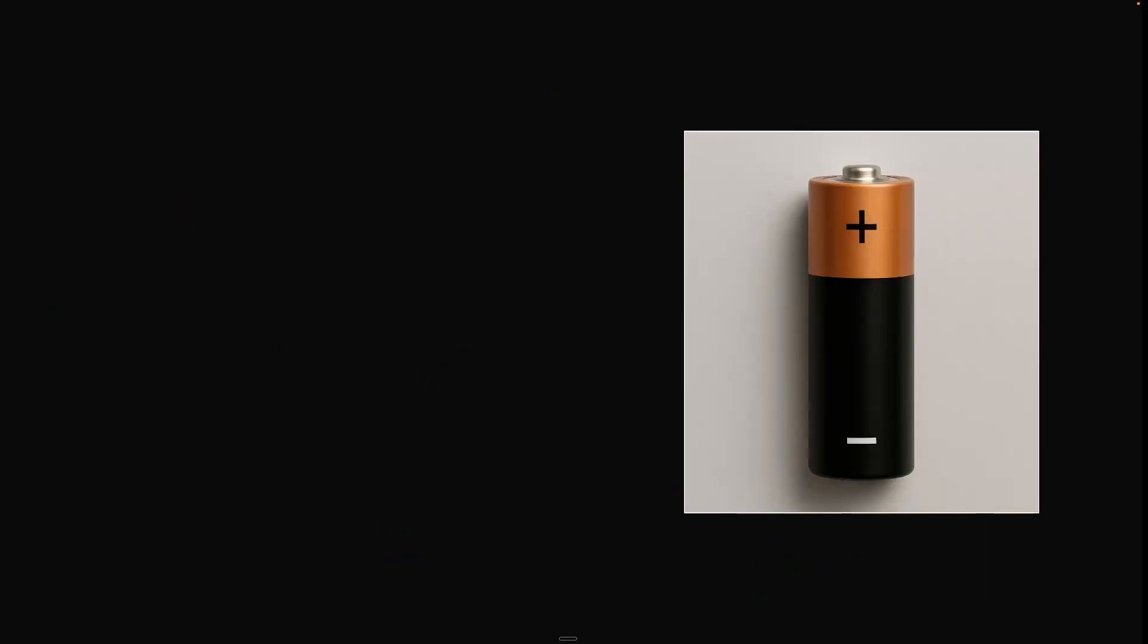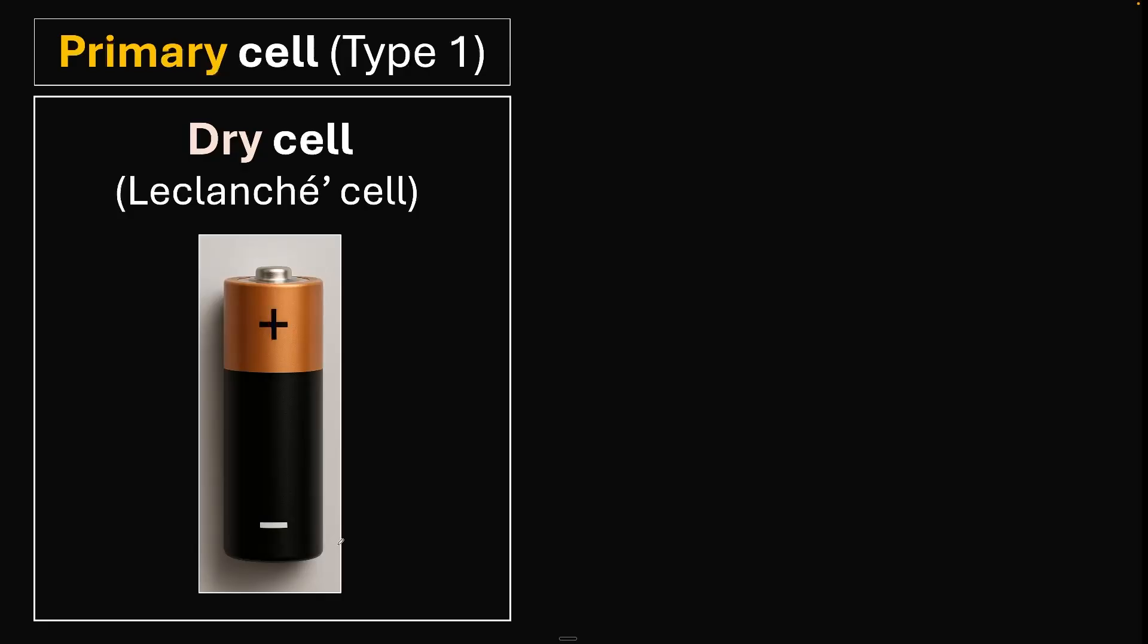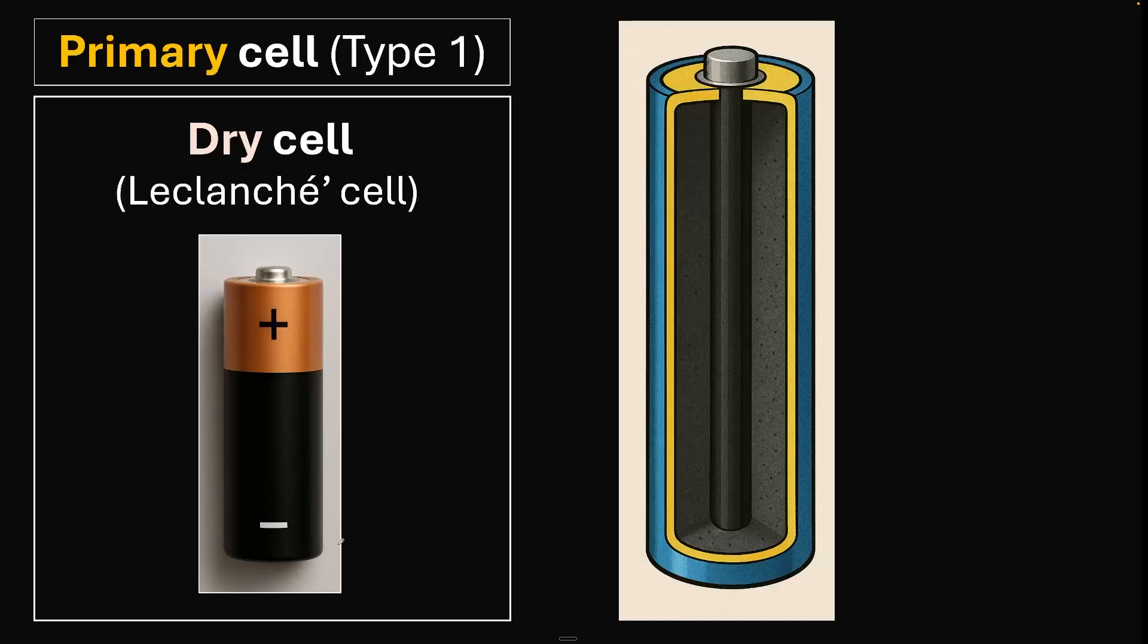In this video, we want to dive deep into the primary cell. But why can't the primary cell be recharged? To answer that, let's look inside the battery. Let's talk about the first type, the dry cell or the Leclanché cell, named after the French guy. This is your double A battery.